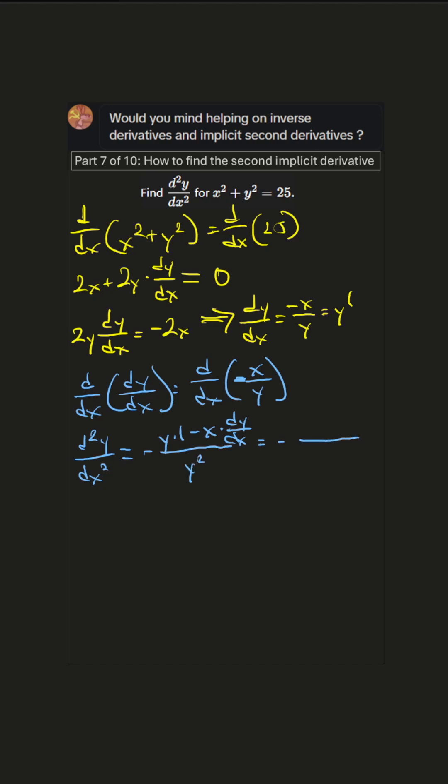Okay let's continue. We have y minus x times something here. Now what's that something? Well we found that dy/dx equals negative x over y. So let's plug that in and continue simplifying.